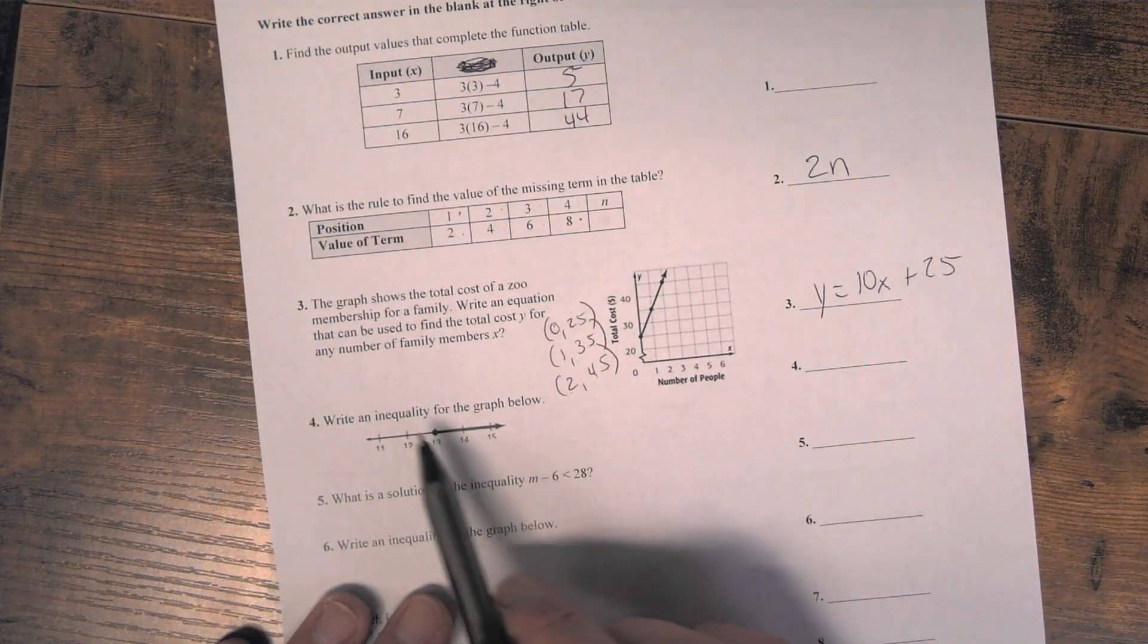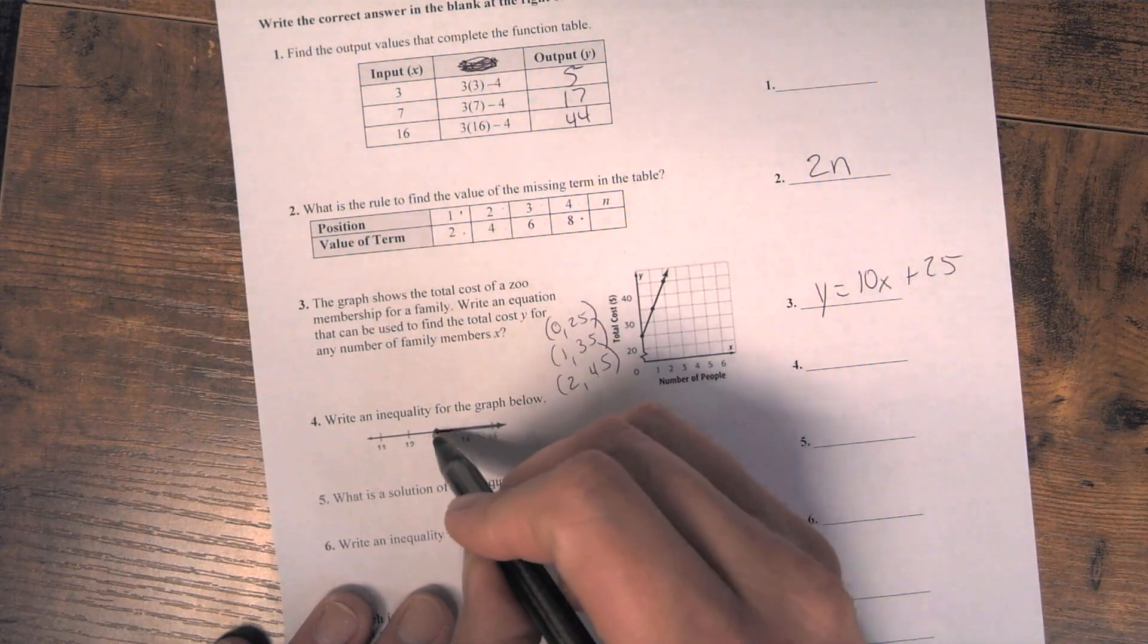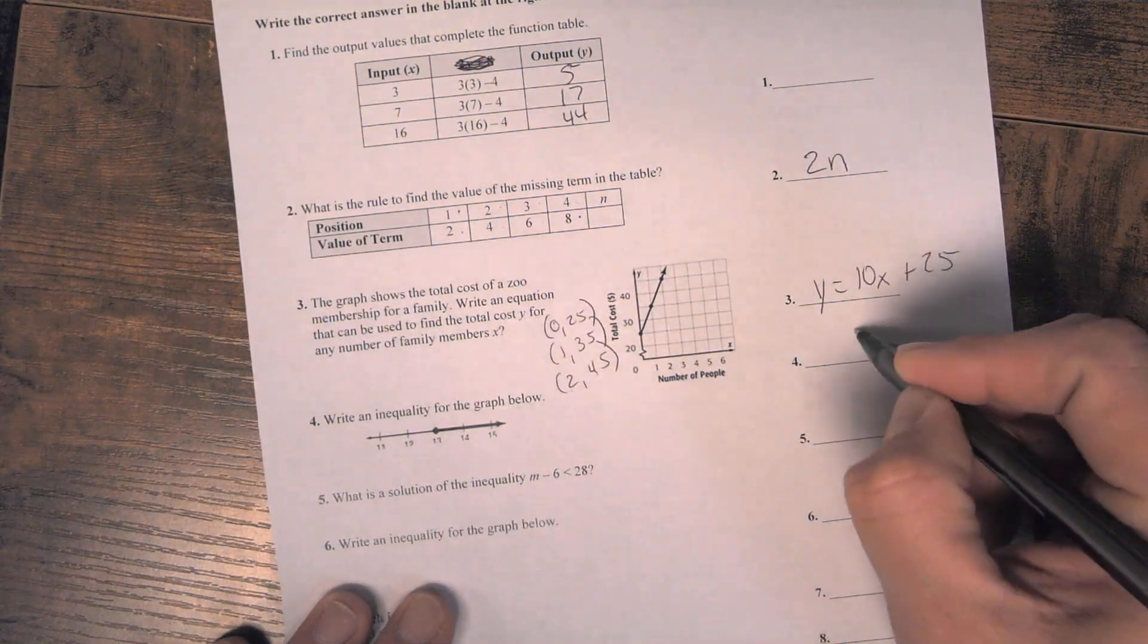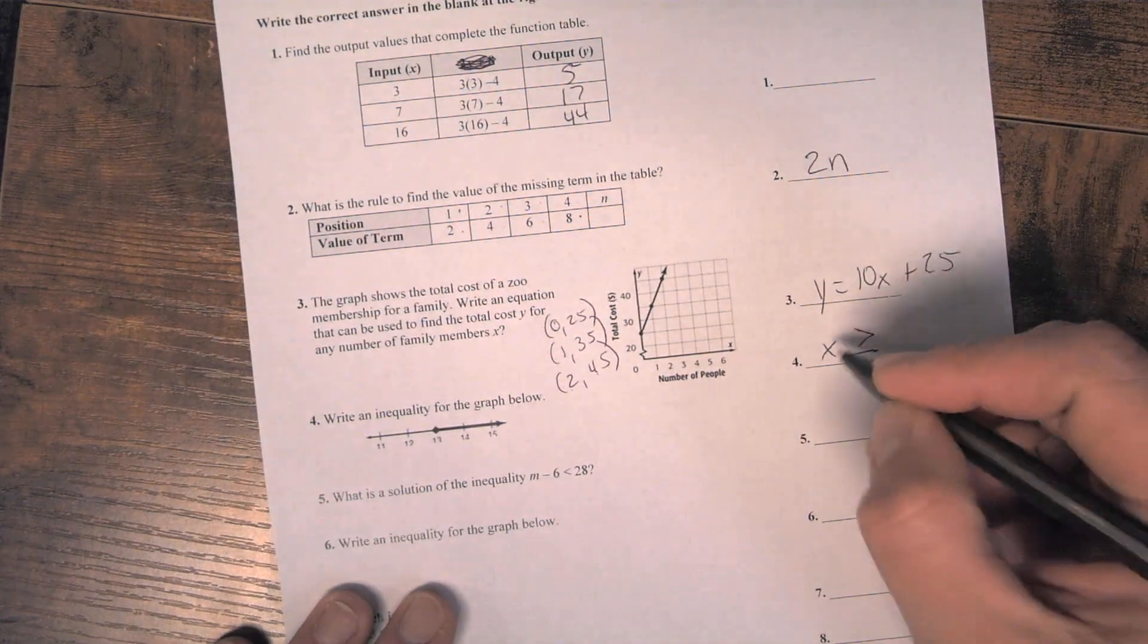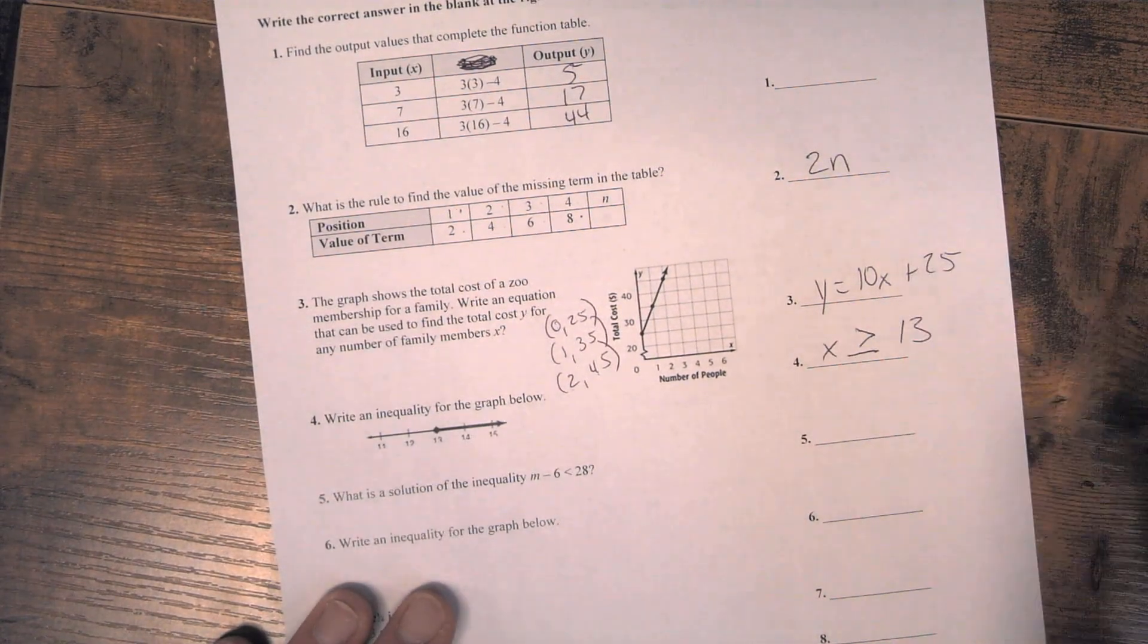Number 4, write an inequality for this graph. So since it's a dot and it goes to the right, that means it's greater than or equal to. Use any variable you want. I use x. x is greater than or equal to 13.